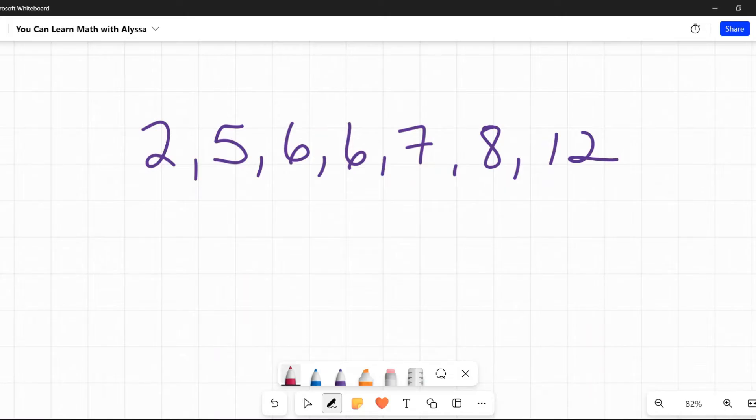So first let's add these up. Okay, so we have 20, 33, 44, 46. Alright, so 46 total here, and we are going to divide by 1, 2, 3, 4, 5, 6, 7 numbers in the data set. 46 divided by 7.